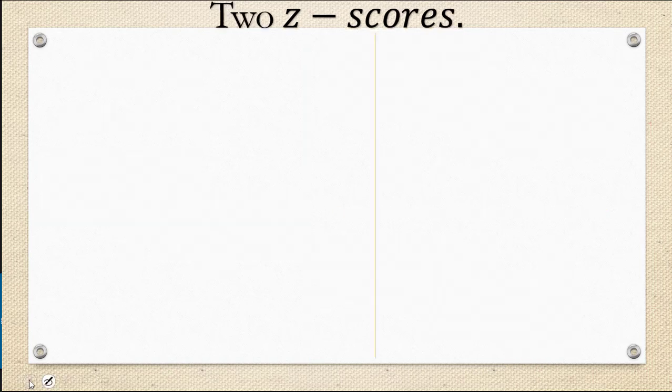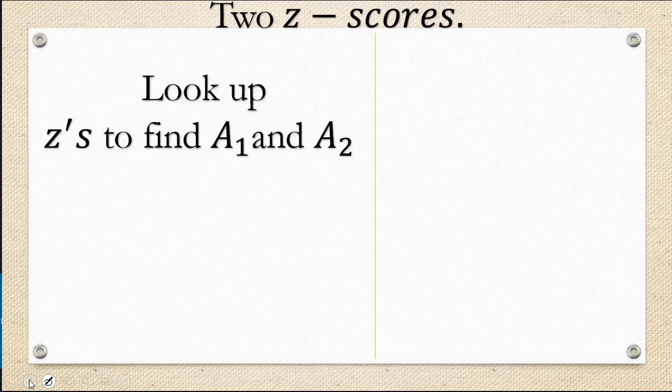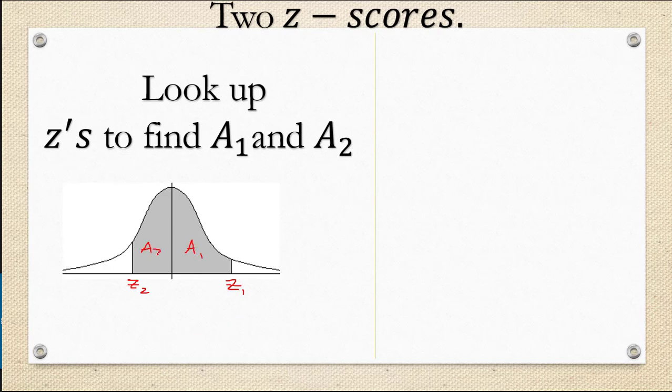If you have two z-scores you're still going to look up the two z-scores but this time you're going to find two different areas A1 and A2 and what you're going to do with those again depends on the diagram. If your z-scores are on opposite sides of the mean so you have one positive z-score and one negative z-score then you're going to find that A1 and A2 need to be added together to get the total area.